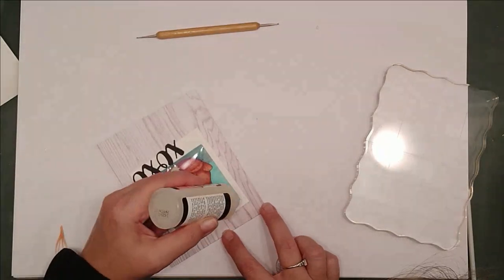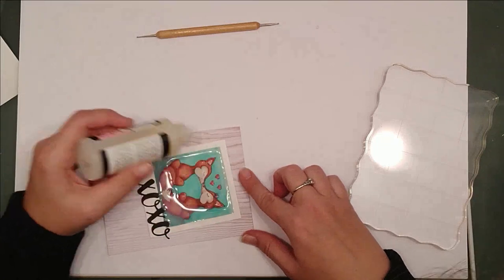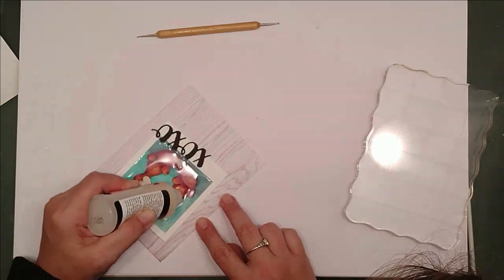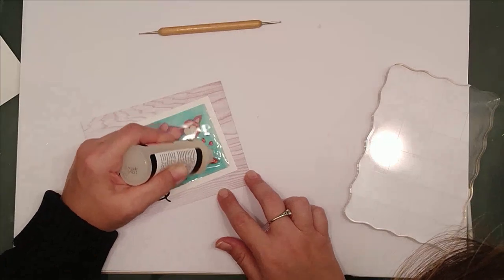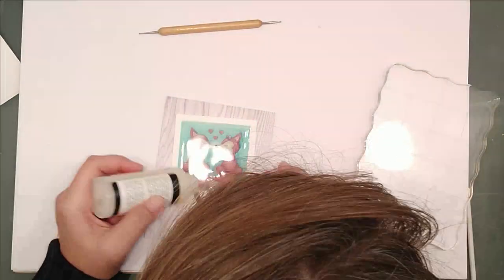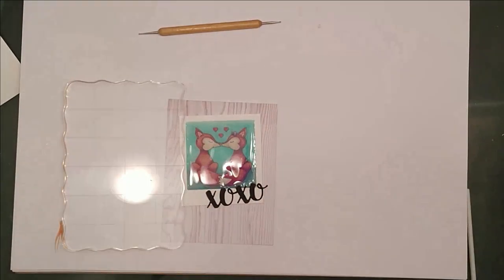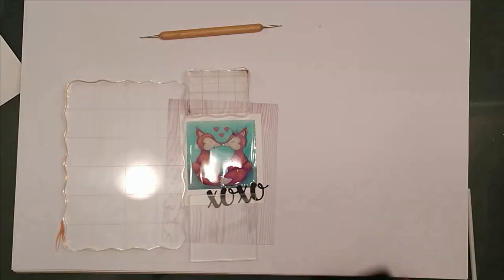And I'll fill in with an even layer of glossy accents all over the place. This is a pretty heavy layer of glossy accents so I let it dry overnight. Once it does dry it becomes crystal clear. You'll see me pull out some more blocks, anything heavy I can find on my desk to help weigh down the edges. I don't want them to curl up as the glossy accents dries.